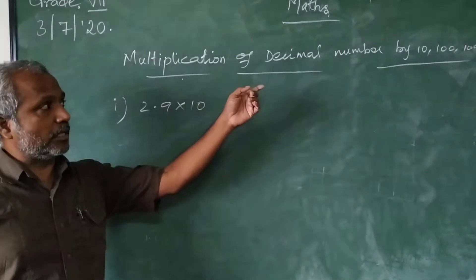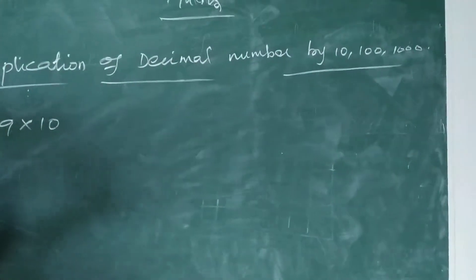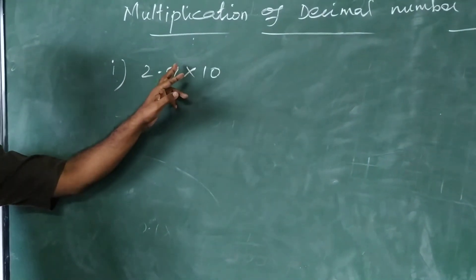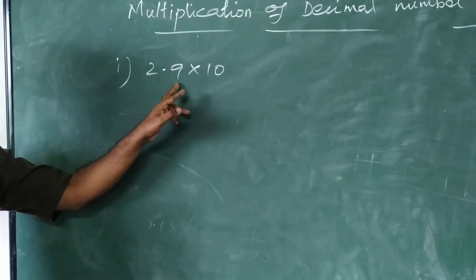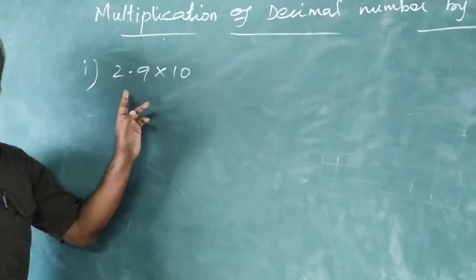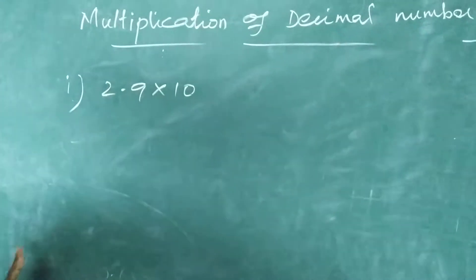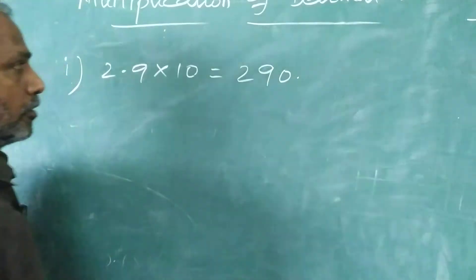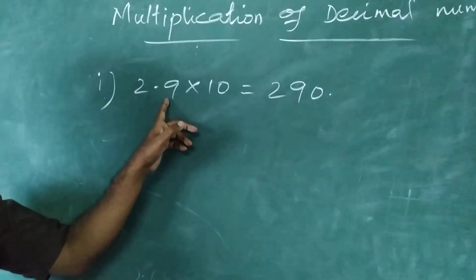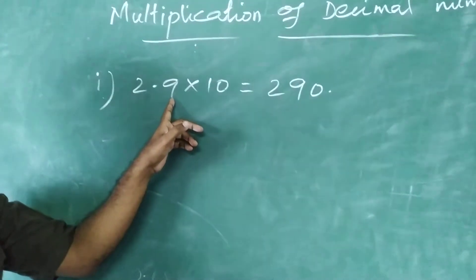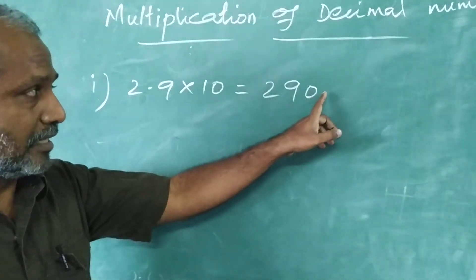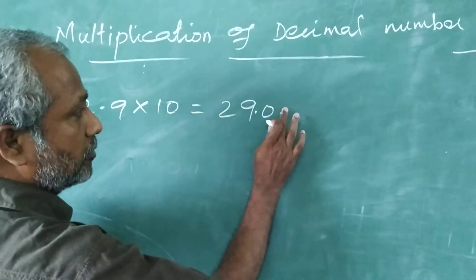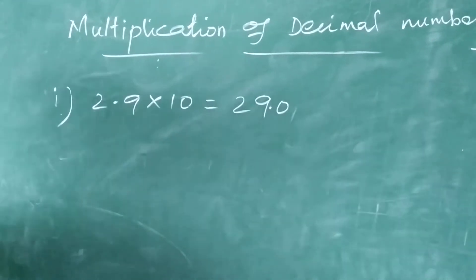Next, we will move to multiplication of a decimal number by 10, 100, and 1,000. I am going to give one example. Take the decimal number 2.9 and multiply with 10. Directly multiply the whole part: 29 into 10 equals 290. Among the numbers, one has a decimal with only one decimal place. So you take the decimal from right to left one place in the result, giving 29.0.